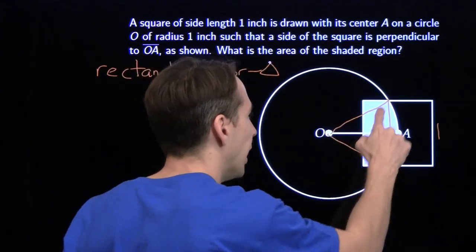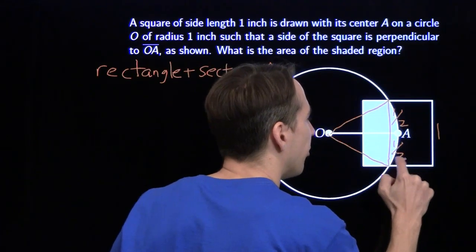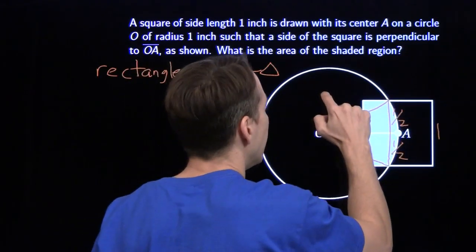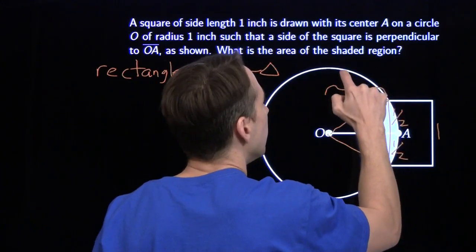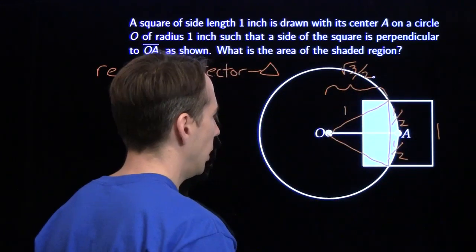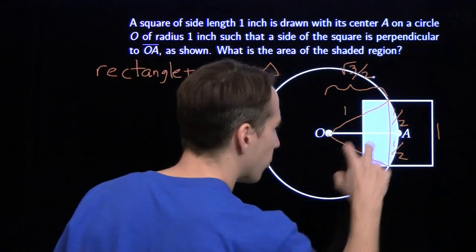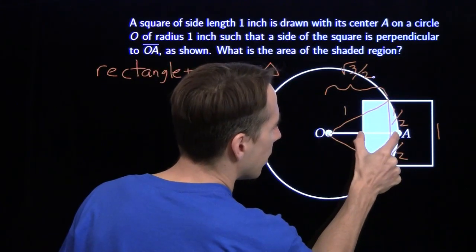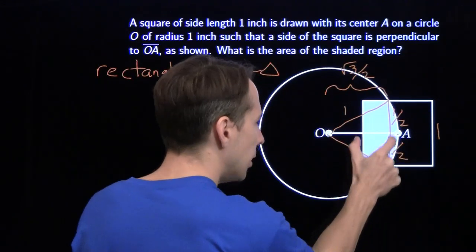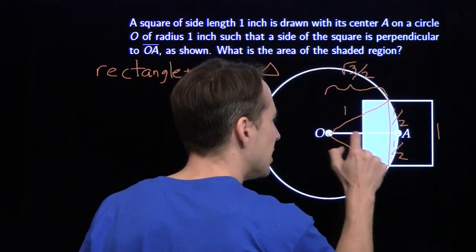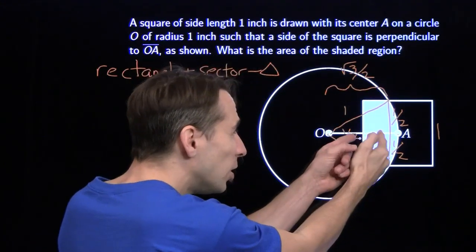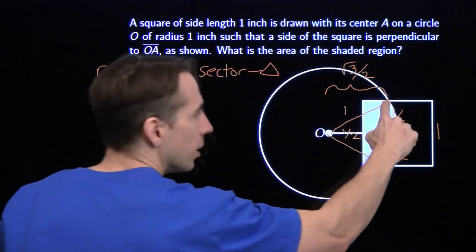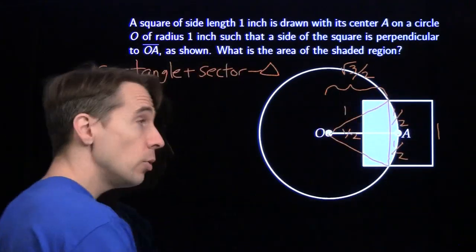This line cuts the equilateral triangle in half. One half here, one half here. We can use the Pythagorean theorem — or we can see the 30-60-90 triangles right there — and find that the height of our triangle is √3/2. I still need the other piece for the rectangle. This segment has length one, and this piece is one-half because A is the center of our square — here to here is half the side length. That means this piece in here is also one-half, and now I know that dimension too.